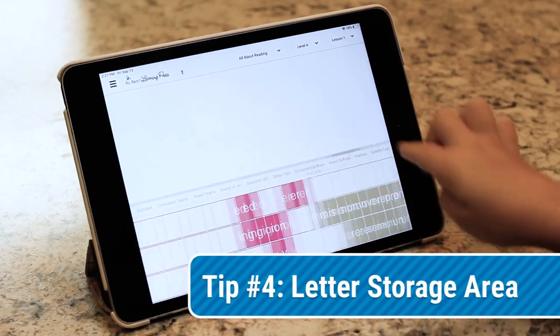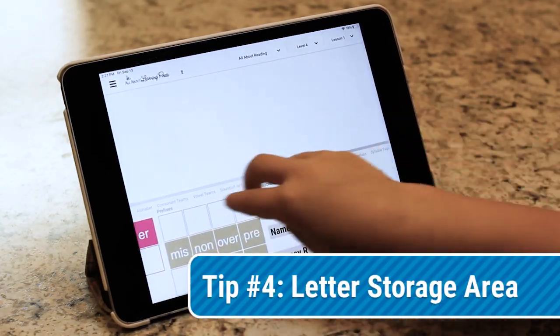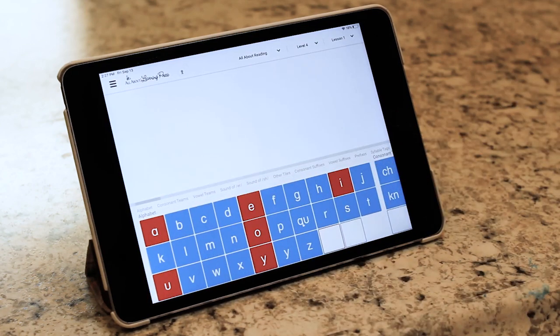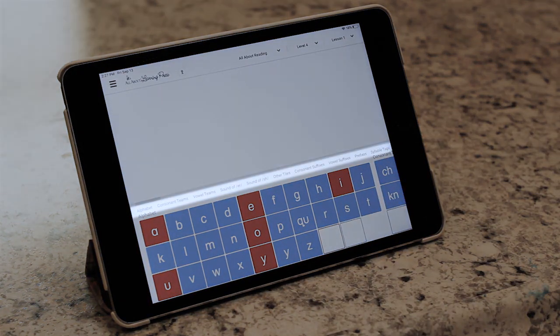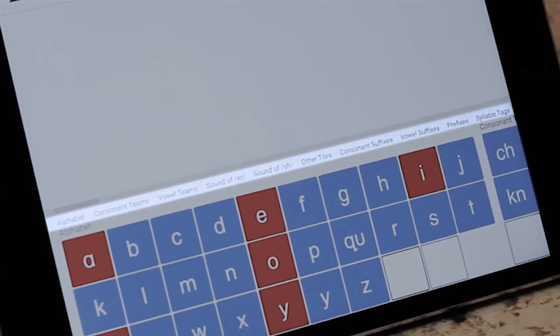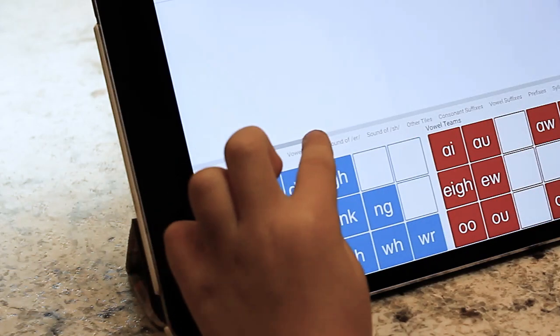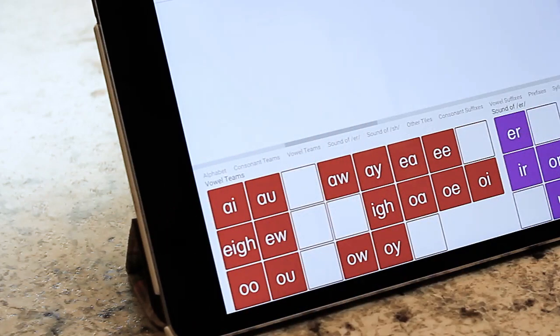When you are scrolling through the letter storage area, try using two fingers. This way you won't accidentally grab letter tiles as you scroll. You can also use the category tabs to quickly find the letter tile you're searching for. For example, if you need a vowel team tile, just touch the vowel team text to go right to that category.